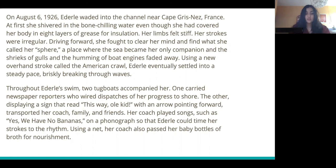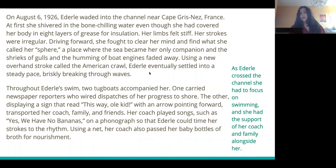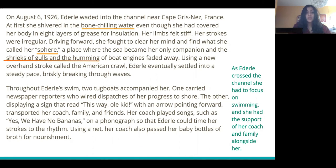So really quickly, the main idea for these two paragraphs is: as Ederle crossed the channel, she had to focus on swimming, and she had the support of her coach and her family alongside her. In paragraph five, we learn a lot about Ederle getting into her mental sphere despite the challenges like the cold and the noise around her. Because she was able to get into her sphere despite all of that, we can infer that she had great mental focus and was really determined. For the second paragraph, we learn about her family and coach supporting her, and we can infer that they also wanted her to defeat the bigger social issue and prove that women could.